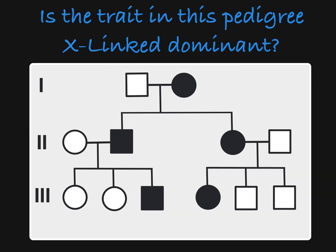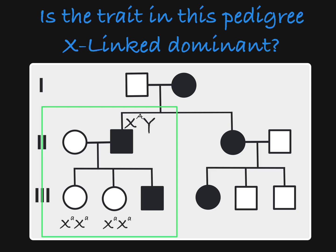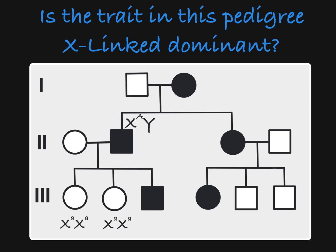Now let's take a look at this pedigree. Is the trait in this pedigree inherited in an X-linked dominant manner? My eye is drawn to this subfamily. This affected male has unaffected female children. If this were a trait inherited in an X-linked dominant mode, then this father would carry the dominant X allele, which he would pass on to his daughters, making them appear affected as well. As they are not in this pedigree, we know that this pedigree must be showing a trait inherited by some other mode of inheritance.